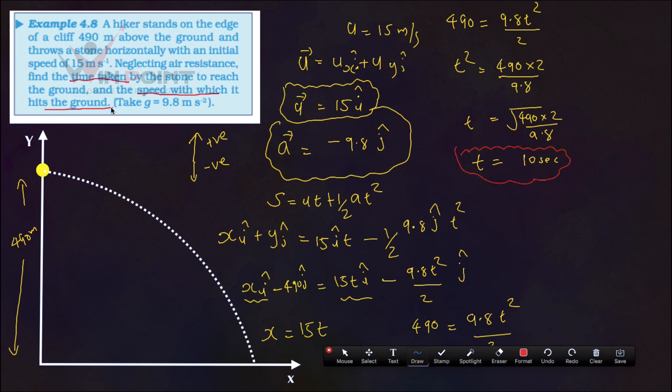Speed with which it hits the ground. We need to find the speed, not velocity. First we need to find the velocity, then we need to take the magnitude. We are using the equation.